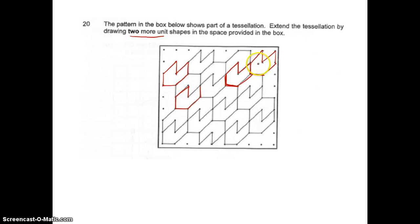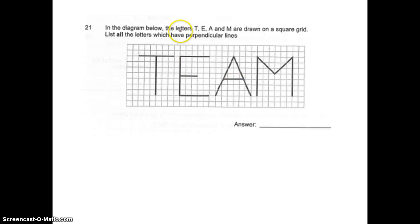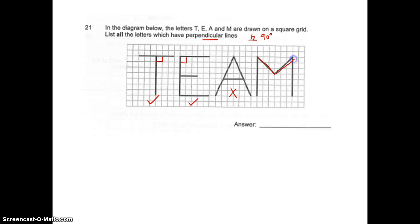Now I have my first unique shape and my second unique shape. In the diagram below, the letters T, E, A, M are drawn on a square grid. List all the letters that have perpendicular lines. Perpendicular lines must be 90 degrees. T has 90 degrees, E has 90 degrees, A has no 90 degrees, and M - these two lines form 90 degrees, so M has 90 degrees. Therefore T, E, and M are my three letters.